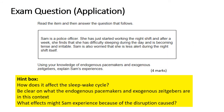We have an exam question to test our knowledge. Before we read through the exam question, I want you to think about what assessment objective it's assessing, what the question is actually asking, what the command words are, and what key terms are important. Read the item and then answer the question that follows. Here we have a scenario. Sam is a police officer. She has just started working the night shift.